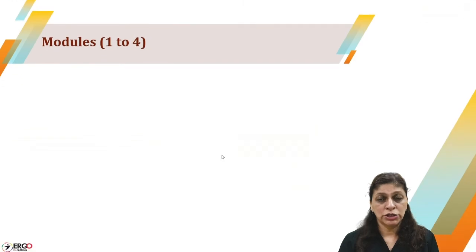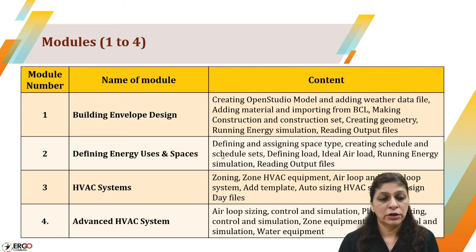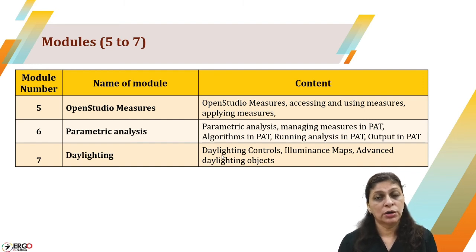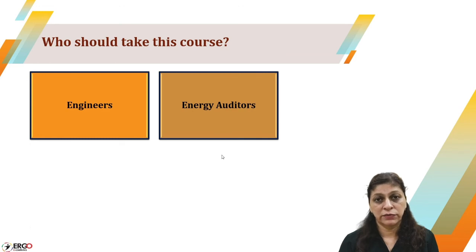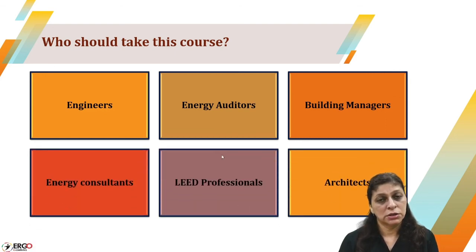This is a seven module course. Each module has a different composition, covering topics from building envelope design, defining energy use in spaces, HVAC, advanced HVAC looping, applying measures to see energy saving effects, parametric analysis impact, and daylighting control in the last module. Those who should take this course include building engineers, auditors, consultants, facility managers, building managers, energy consultants, LEED professionals, and architects. This was the introduction; for detail you need to register for all seven modules. Thank you for watching.